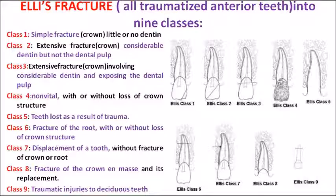Concentrate on the picture. Ellis Class 1 is a simple fracture involving only the enamel portion of the tooth — there is no involvement of dentine. Class 2 involves considerable dentine but not pulp exposure, so only enamel and dentine fracture are involved in Class 2.